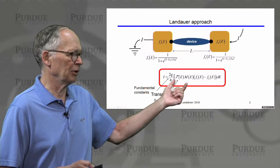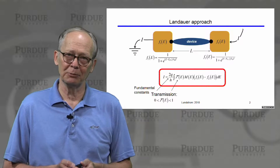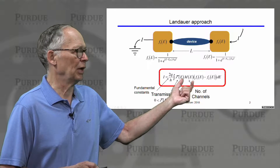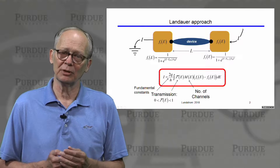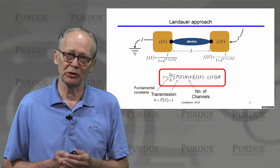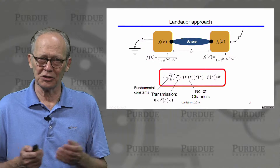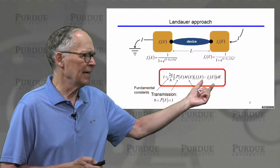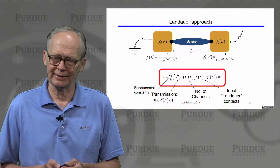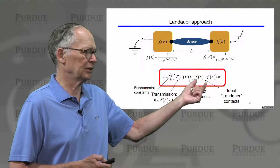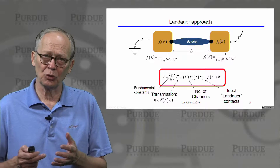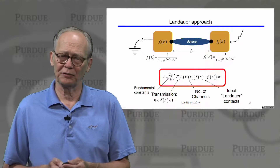There is a parameter called transmission, which is just a number between 0 and 1. There is a parameter called M of E, which is the number of channels — which can be a small countable number in a nano device or a large number in a larger device. And then there is the difference between the two Fermi levels in the two contacts of the device. This difference, F1 minus F2, we call the Fermi window.